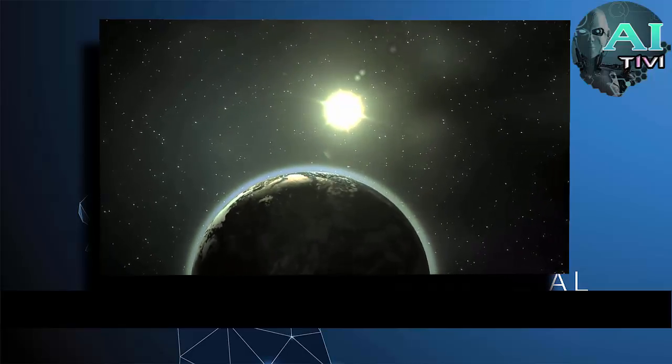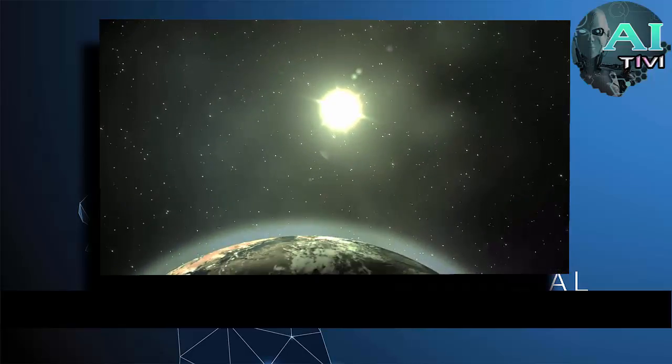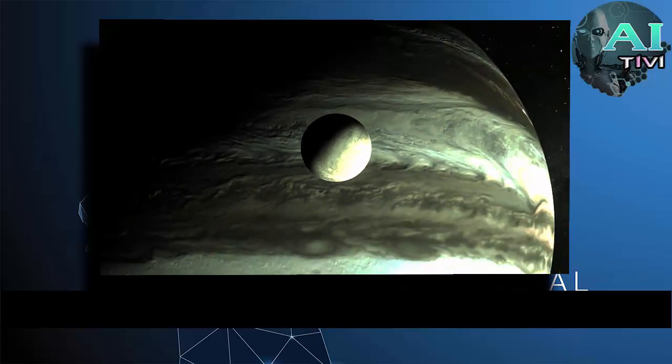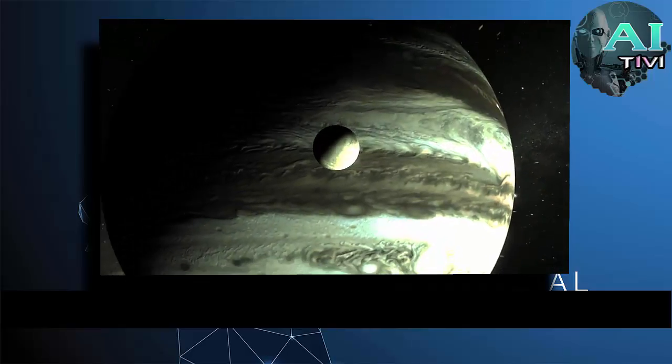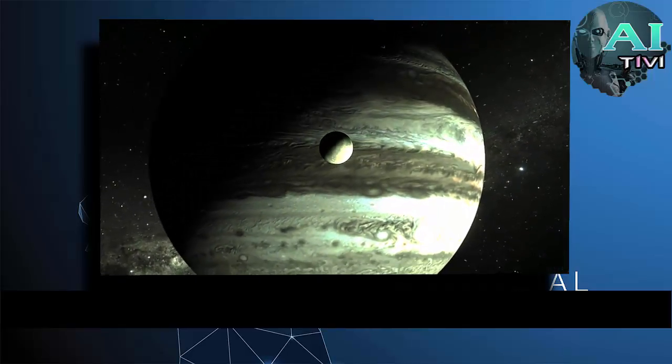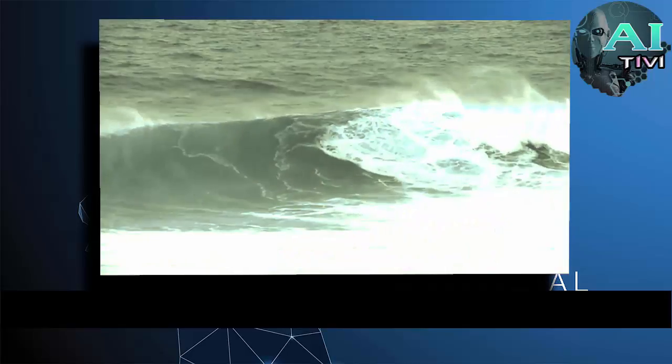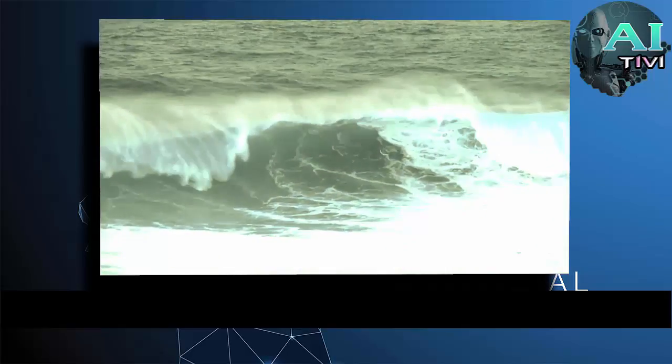As we have begun finding exoplanets around distant stars, we developed the term Super Earth, planets larger than our own, but not so big as a gas giant like Jupiter. You often hear these compared to Earth, but realistically this is not the case. Even those not too close nor too far from their sun to have liquid water on their surface are not going to be much like Earth.